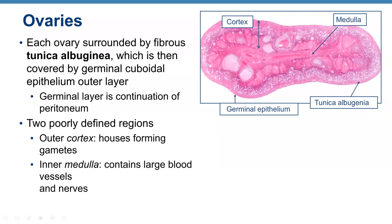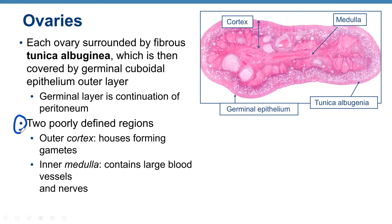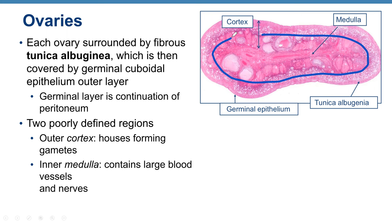Each ovary is surrounded by a fibrous tunica albuginea — similar to the testes — which is covered by germinal cuboidal epithelium, a continuation of the peritoneum. The ovary has two poorly defined regions: the outer cortex, which houses forming gametes (ova), and the inner medulla, where you find vessels and nerves.